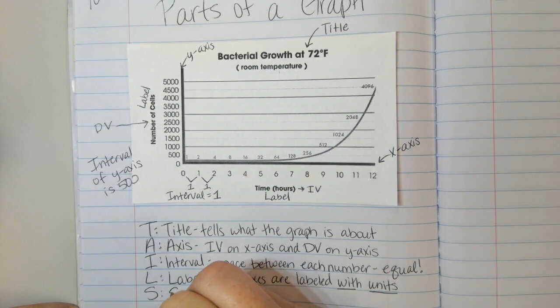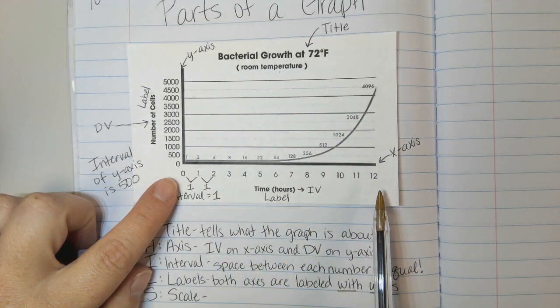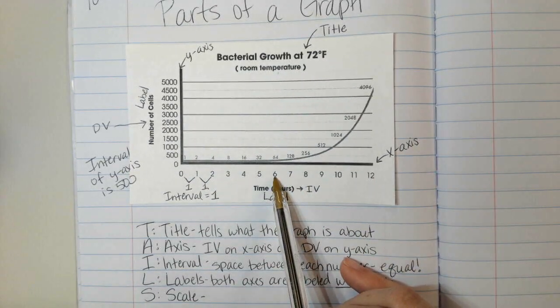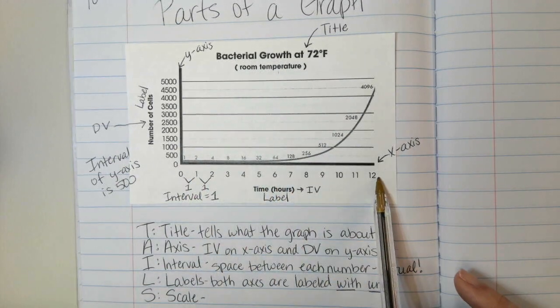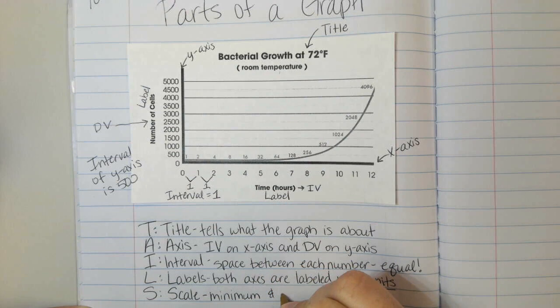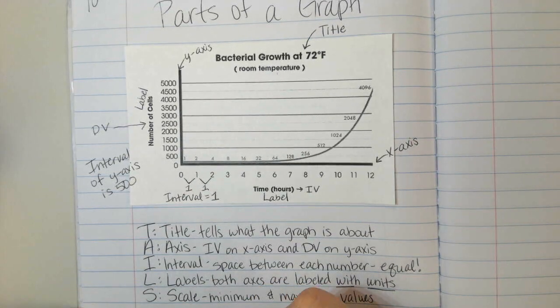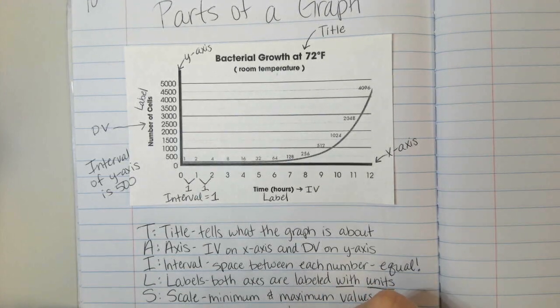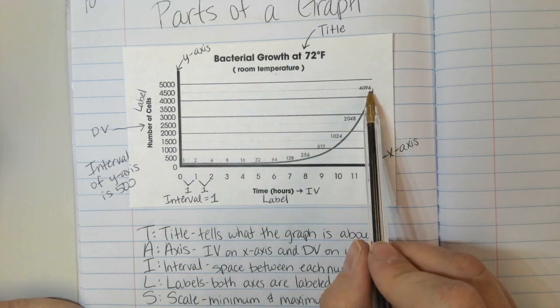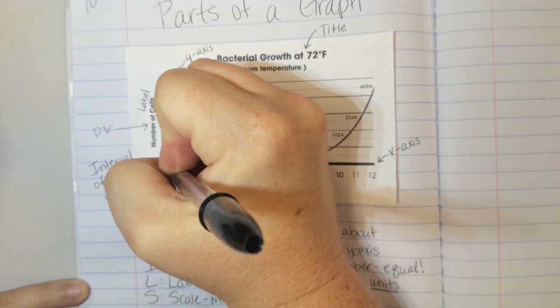The S stands for scale. The scale is the range of numbers on each axis from the minimum to the maximum. We need to make sure that they're appropriate. If we measured, if we collected data for 12 hours, we can't stop our graph at 6. We've got to have all 12. Or if we measured for 12 hours, we don't want our graph to go all the way to 24, because then nothing will be over here. So I'm going to say that the minimum and maximum values are appropriate and we need to use the entire graph. We don't want a lot of extra space. Here you see it goes up to 4,096, so we went just above that to 5,000. We don't want to keep going any higher than that. I'm going to label this scale as all this right here.